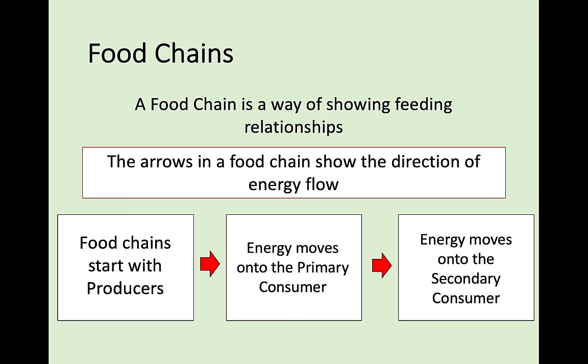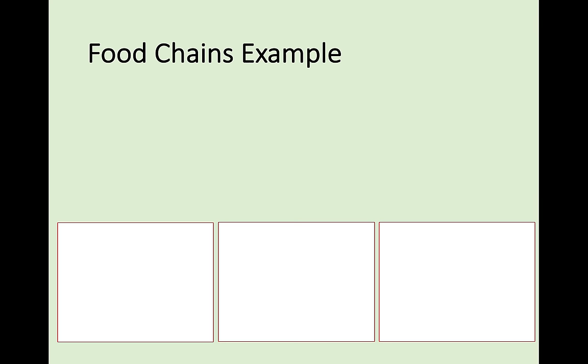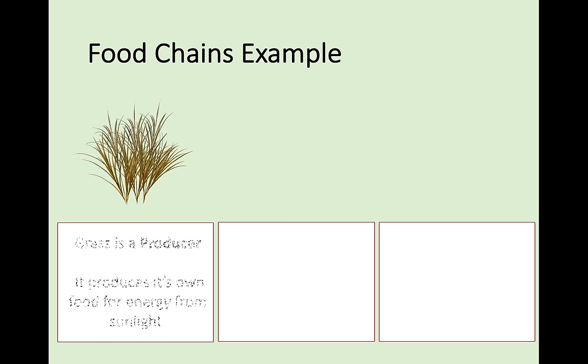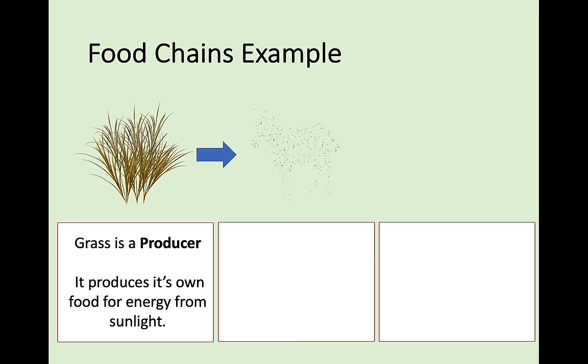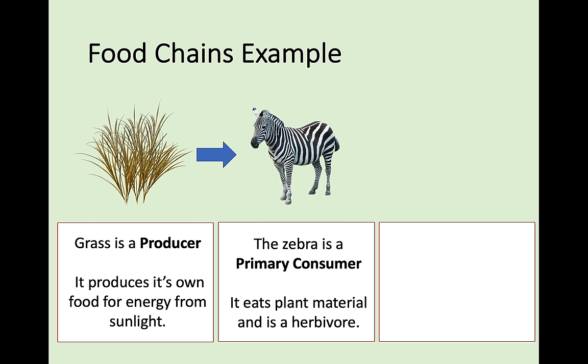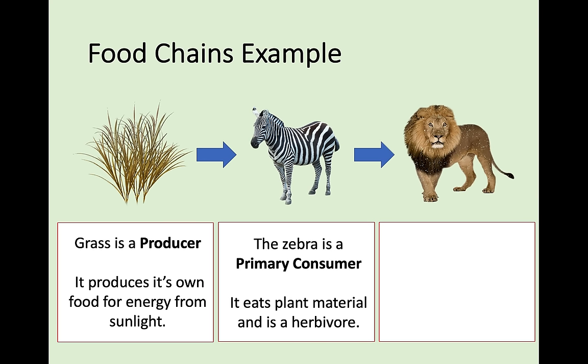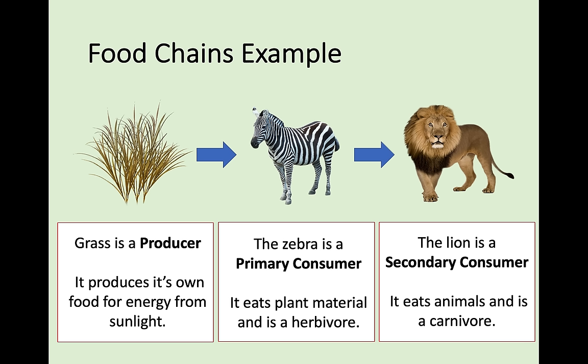Make sure you highlight that — it's very important to remember what the arrows in a food chain actually show. For example: grass is a producer, producing its own food from sunlight. That energy gets passed on to a zebra, the primary consumer and a herbivore. Then a lion, the secondary consumer and a carnivore, eats the zebra. The energy started from the sun, was taken in by the plant, then passed to the zebra, then to the lion.